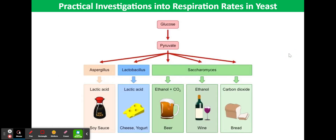Yeast can also oxidise ethanol under aerobic conditions. The alcohol content of cider is around 6%, and so not enough to kill the yeast. However, with anaerobic respiration, this might increase in anaerobic flasks, whereas it will decrease in aerobic flasks.